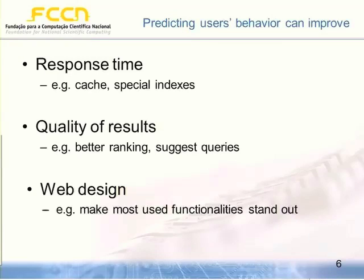By understanding user behavior, we can improve the response time. There are several applications: improving response time by creating cache mechanisms, creating special indexes of the most-searched information, seeing where users click most and what results are most interesting to improve those results, seeing how users refine queries to suggest better terms, or even improving web design by identifying the most-used functionalities and giving them a more prominent place in the interface.